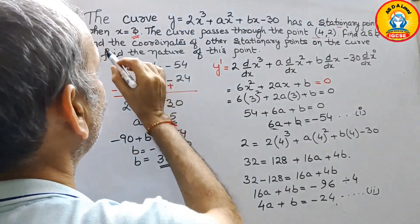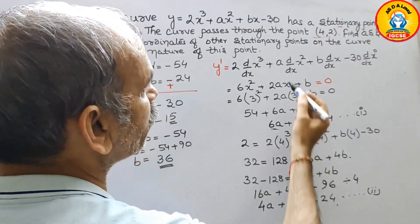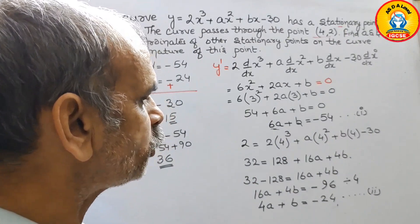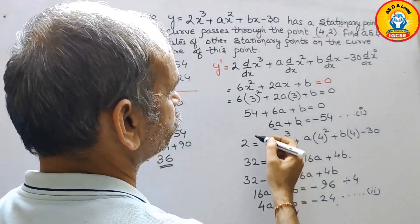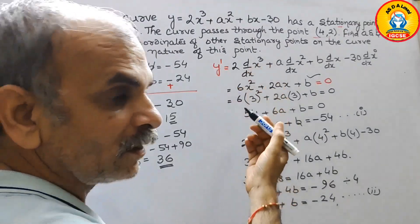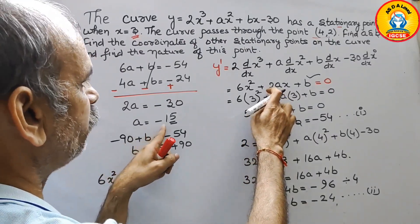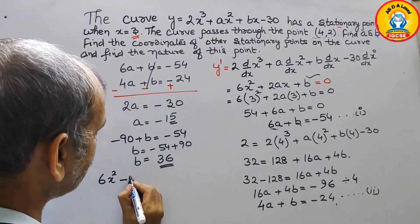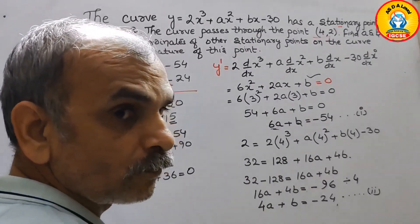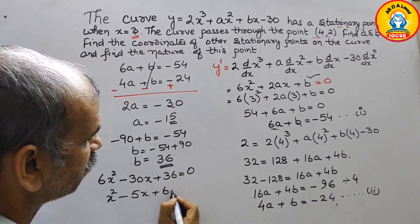Next, find the coordinates of the other stationary points. We already know one stationary point is at x equals 3. To find the other, substitute a equals minus 15 and b equals 36 into y' equals 0: 6x² plus 2(minus 15)x plus 36 equals 0, giving 6x² minus 30x plus 36 equals 0. Dividing by 6: x² minus 5x plus 6 equals 0.